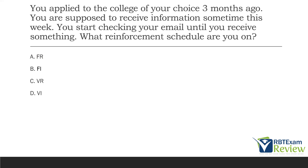You applied to the college of your choice three months ago. You were supposed to receive information sometime this week. You start checking your email until you receive something. What reinforcement schedule are you on? The reinforcement is receiving that email; the behavior is checking the email. It's dependent on your response — after a certain number of responses you'll receive reinforcement, but you're not sure how many. It might take 100 checks or 20, but eventually one response will produce reinforcement. That sounds like the slot machine effect — VR.